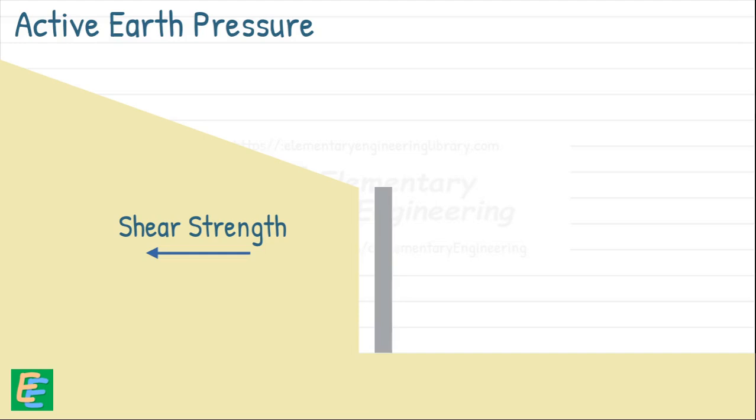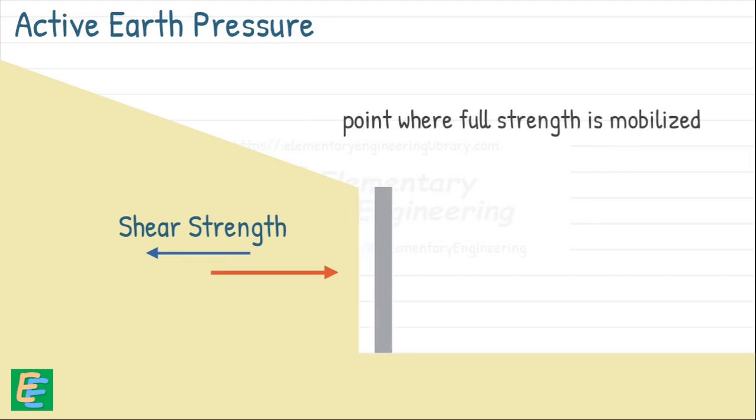In reality, it stays in contact with the soil. As now soil begins to hold itself together, the lateral pressure acting on the wall starts to decrease. If the wall keeps moving, a point comes where the soil's full shear strength is completely reached.